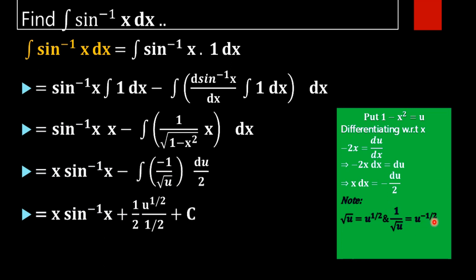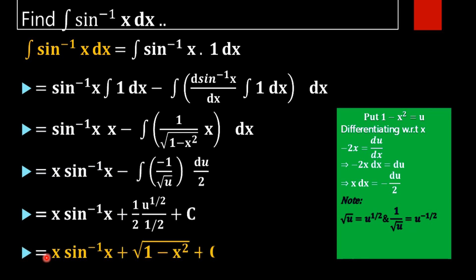1 by root u is u raised to minus half. The integral of u raised to minus half is u raised to minus half plus 1, divided by minus half plus 1. What is minus half plus 1? Half. That is u raised to half by half. The 1 by 2 and this 1 by 2 cancel each other. What is u raised to half? That is root u. So we get x sin inverse x plus root of u, that is 1 minus x square, plus c.